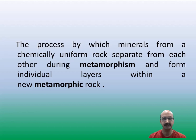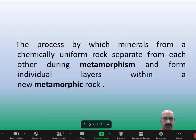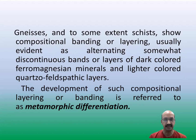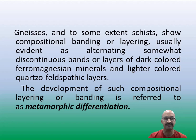Basically, the process by which minerals from a chemically uniform rock separate from each other during metamorphism and form individual layers within a new metamorphic rock is called Metamorphic Differentiation. Many gneisses and few varieties of schists show compositional banding or layering, with dark colored layers consisting of ferromagnesian minerals and light colored layers made up of quartzo-feldspathic material. The development of such compositional layering or banding is referred to as metamorphic differentiation.